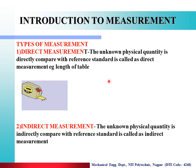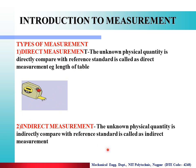Example of direct measurement: length of a table. Here you can see a tape. In the tape, the unknown physical quantity — suppose the length of the table — is directly measured using the tape. That is called direct measurement.